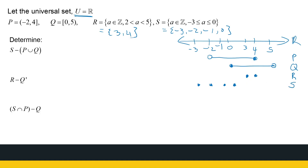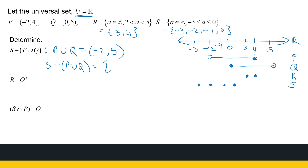The first question is S without (P union Q). We need to find P union Q first. Looking at P and Q, put them all together and it's everything from minus 2 to 5, where both endpoints are excluded. Then S without (P union Q): go to S — minus 3, minus 2, minus 1, 0 — and take away everything in P union Q. Minus 3 stays, minus 2 stays, minus 1 goes, 0 goes. So we're left with minus 3 and minus 2.